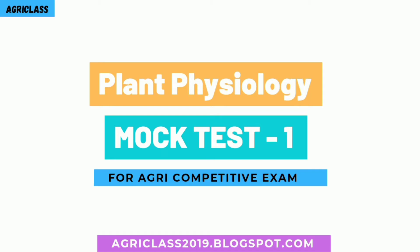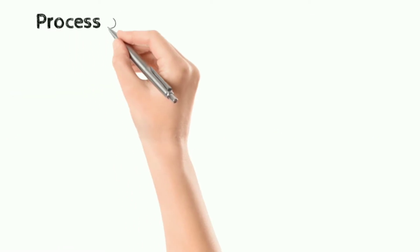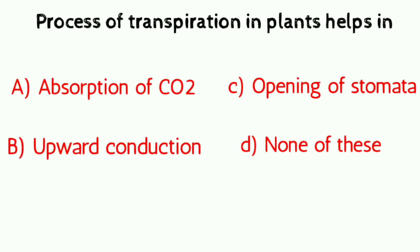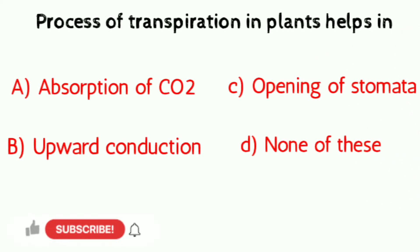Hello friends, welcome to Agri-Class. Today we talk about plant pathology mock test 1. If you are new to the channel, please subscribe. Let's start. Question number one: the process of transpiration in plants helps in — a) absorption of CO2, b) upward conduction, c) opening of stomata, d) none of these.